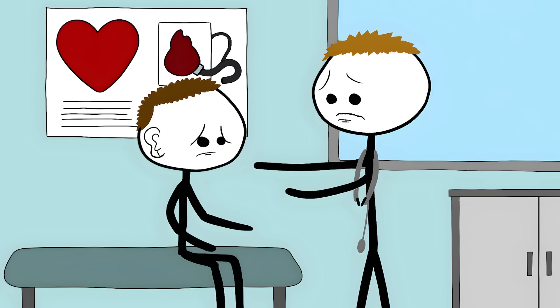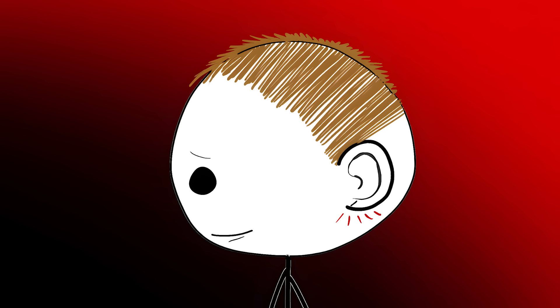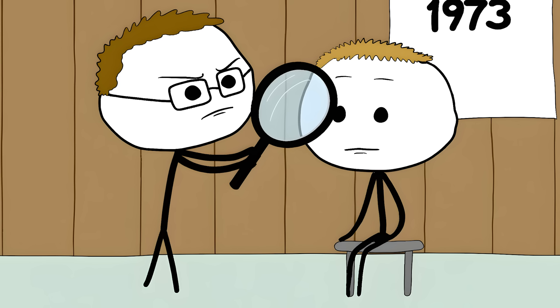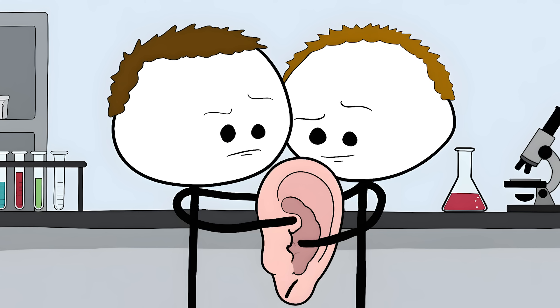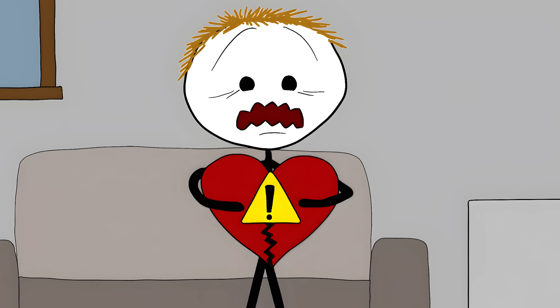Number 3. The diagonal earlobe crease. A diagonal line cutting across your earlobe that might be trying to tell you something pretty serious. Back in 1973, a doctor named Sanders Frank noticed something strange. A lot of his heart patients had this weird diagonal crease in their earlobes. Now more and more doctors are paying attention. Turns out, this tiny wrinkle might be a warning sign that your heart's in trouble.